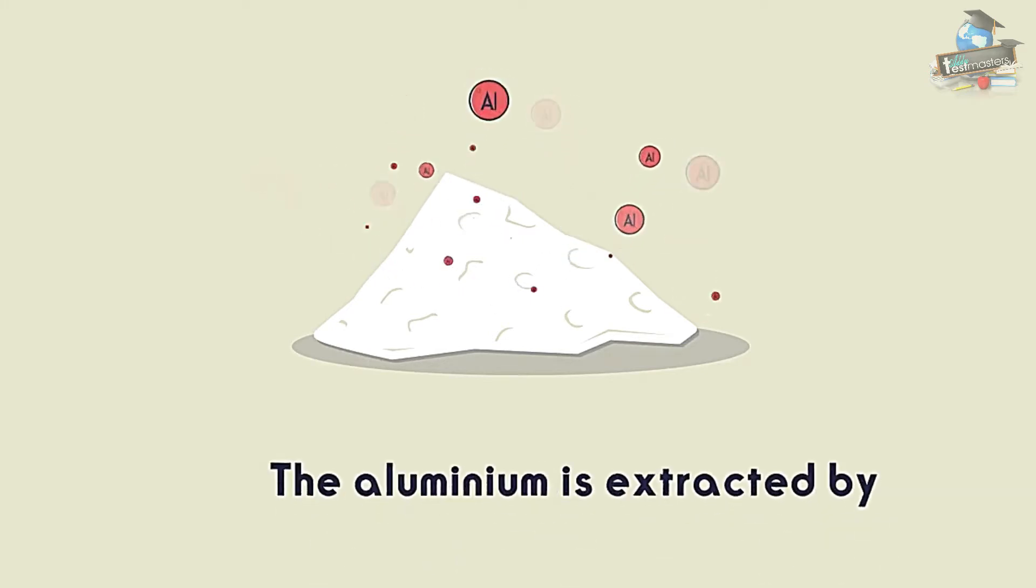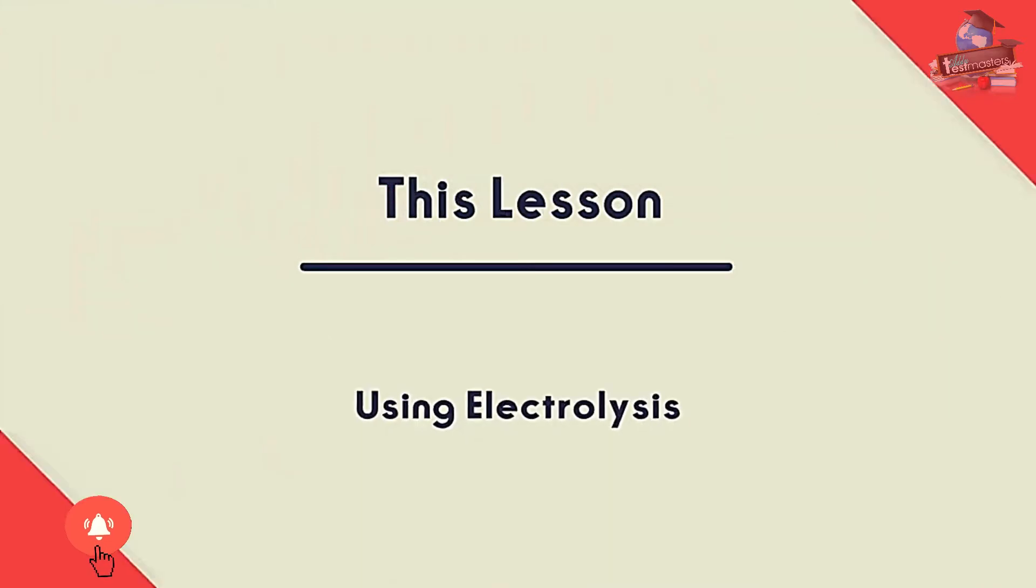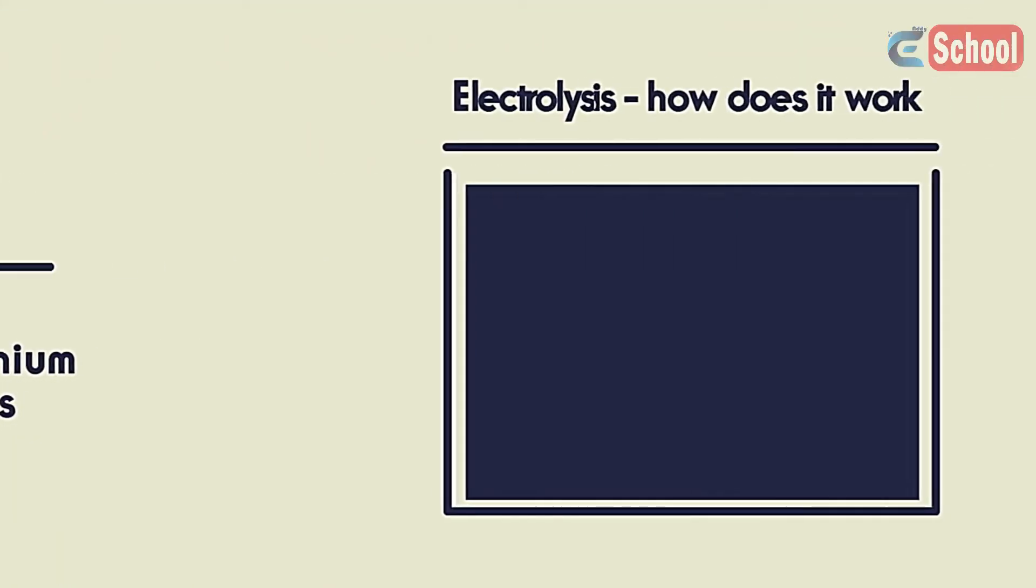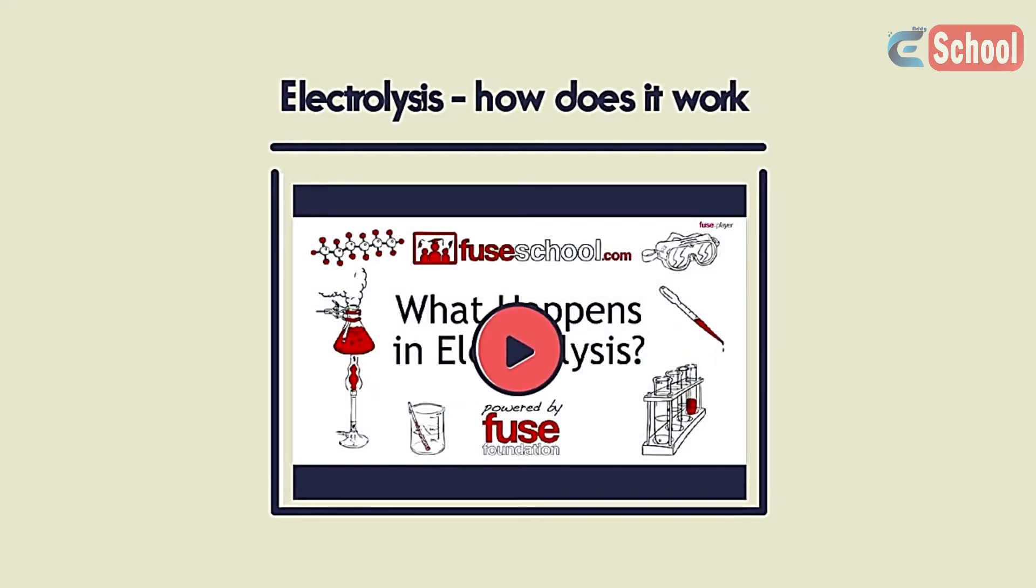The aluminium is extracted by electrolysis. In this video, we are going to look at how aluminium is extracted using electrolysis. You should already know how electrolysis works. If you have forgotten, watch our video on electrolysis.